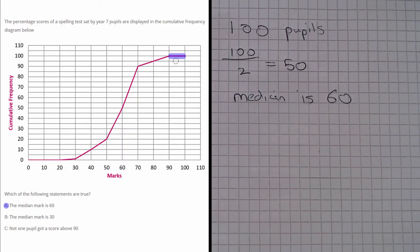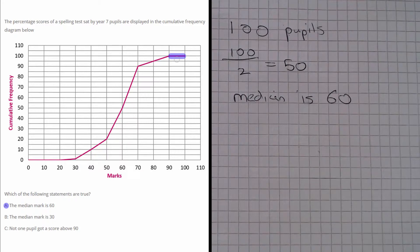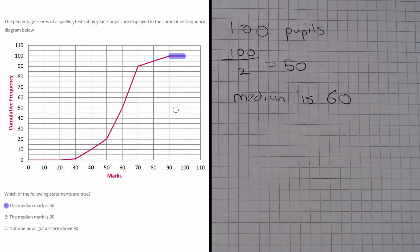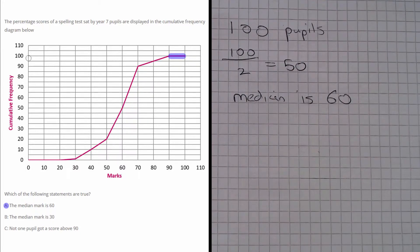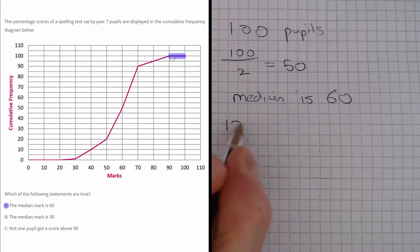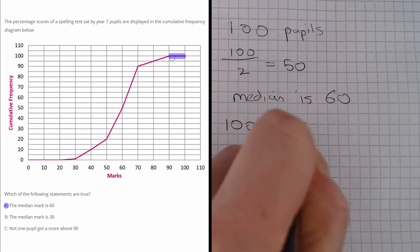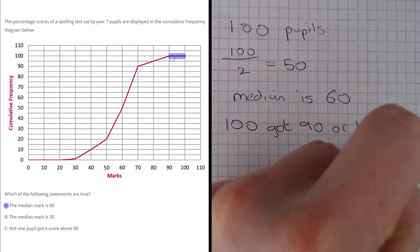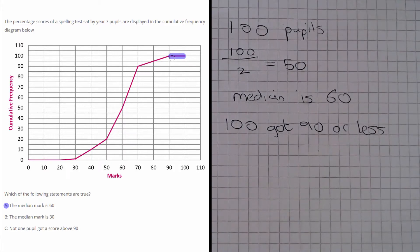And that's very important because actually what this tells us is at 90 we have a cumulative frequency of 100. So that means that 100 people got a mark of 90 or less. So 100 got 90 or less.